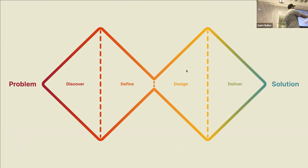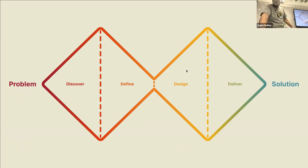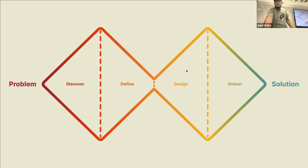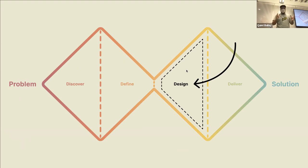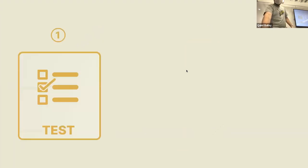This is the UX process, vaguely defined. When we're doing Figma prototyping, that's generally going to fall in this design area. After we've done our research and defined what we're going to do, once we start designing is when we're going to use Figma for what we use it for.